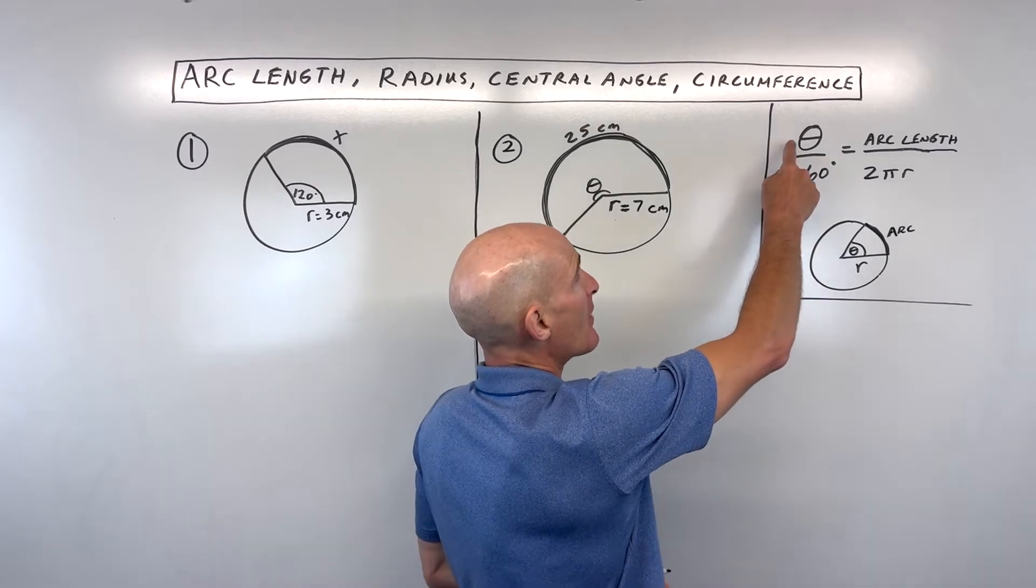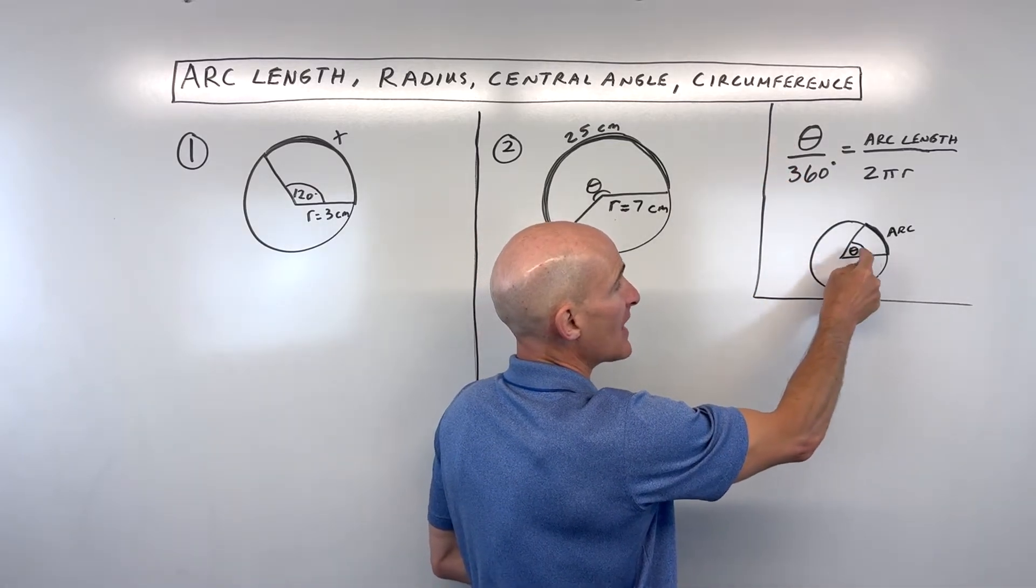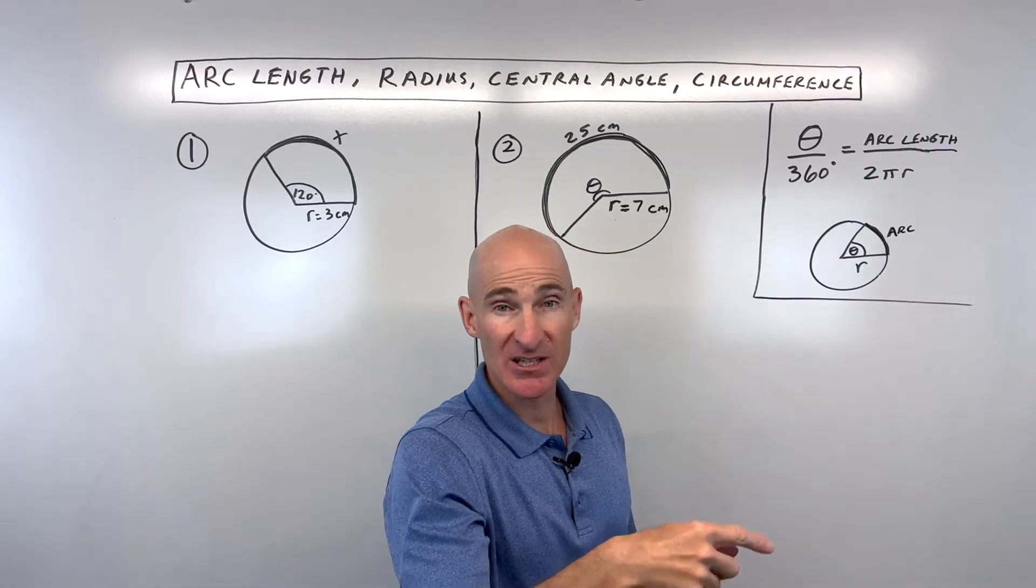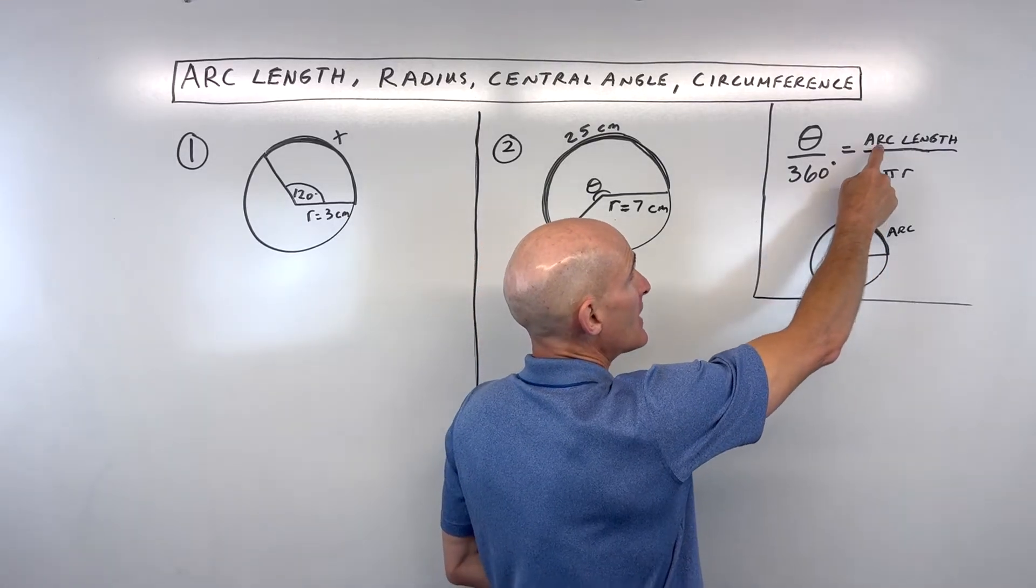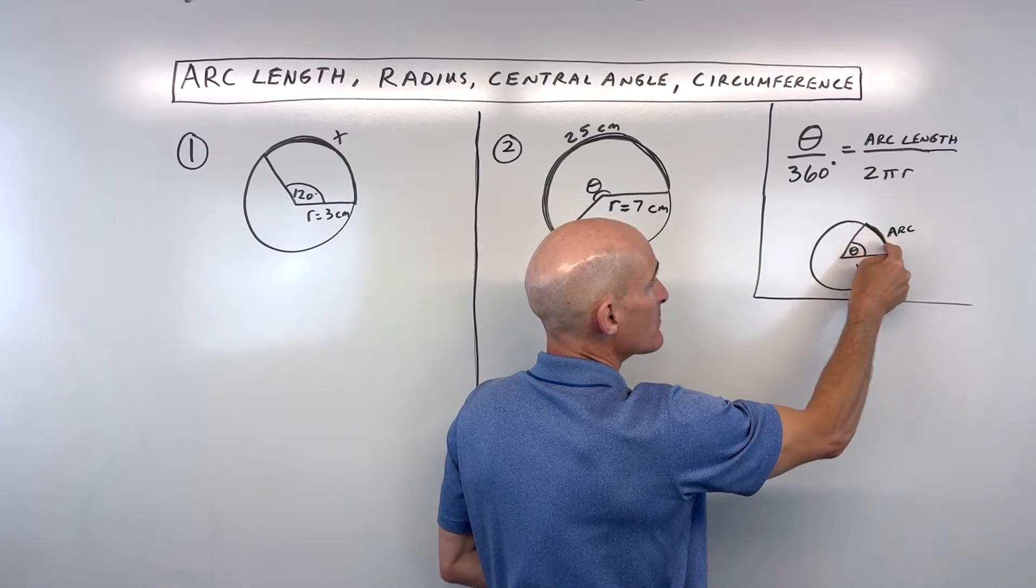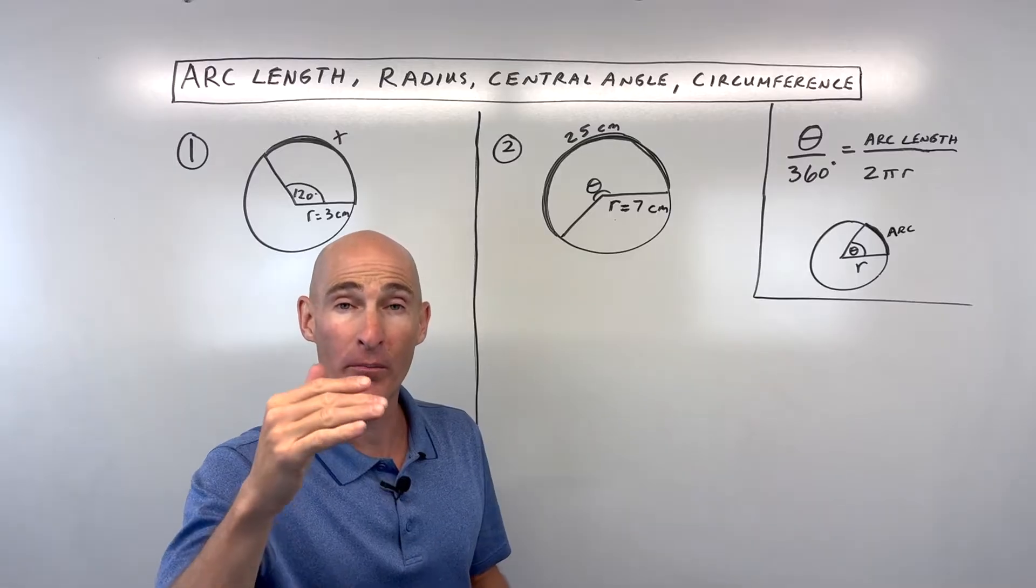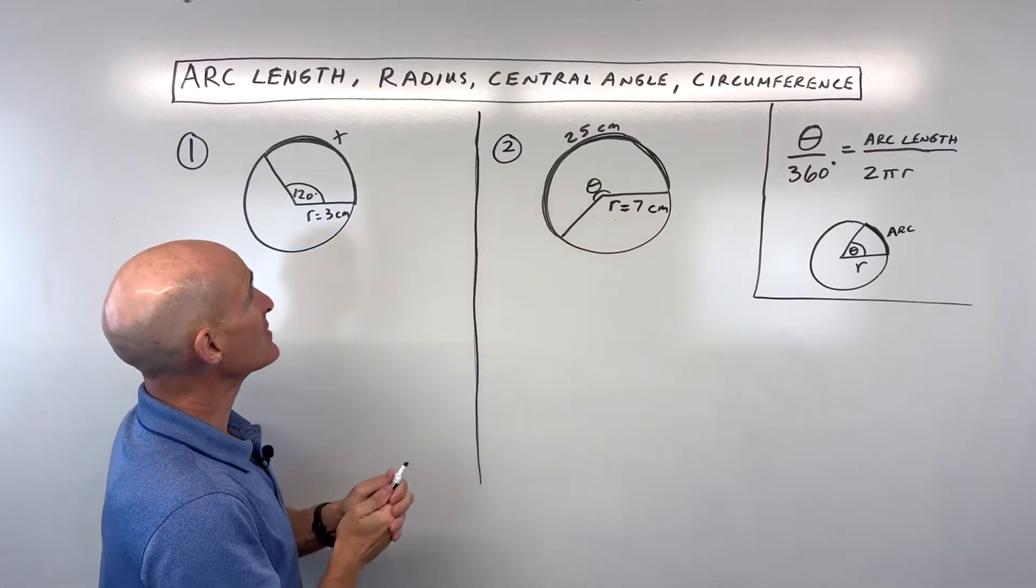When you think of a proportion, you've got the part to the whole, like this angle theta, the central angle theta, to the whole 360, that's all the way around a circle, is the same ratio as the arc length, this portion of the circle, to the whole circumference, which is 2πr. So, part to whole, part to whole is how we work with these problems.